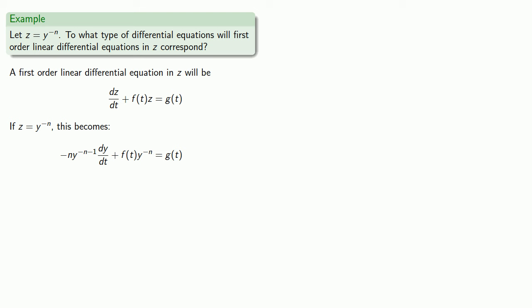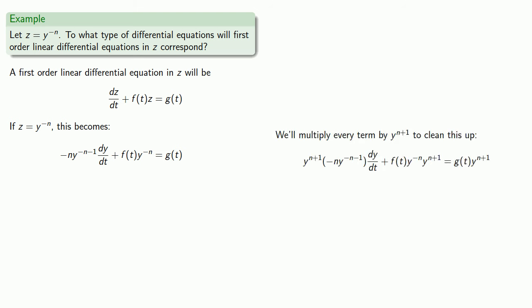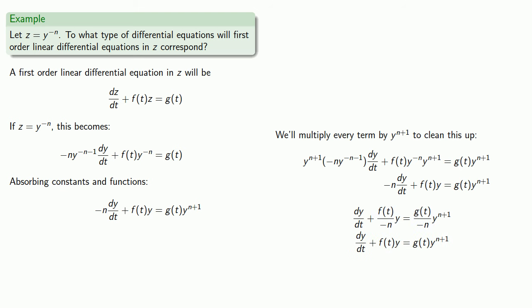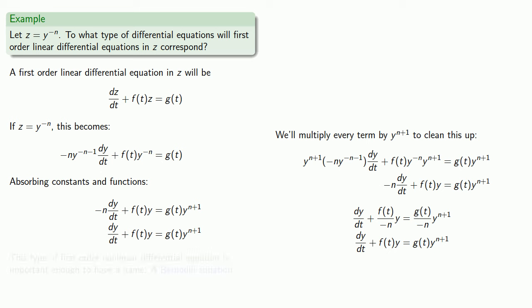This is rather messy, so let's do a little algebra. We can multiply every term by y to the power n plus 1 to clear up the exponents. Using our power of absorbing constants and functions: we have a factor of minus n, so if we divide everything by minus n, that division gets absorbed into f of t and g of t — reduce, reuse, recycle, calling them the same names. We now have a first-order differential equation because we have a first derivative, but because we have a power on y other than 1, this is non-linear. This type of first-order non-linear differential equation is important enough to have a name: it's called a Bernoulli equation.